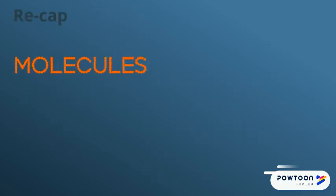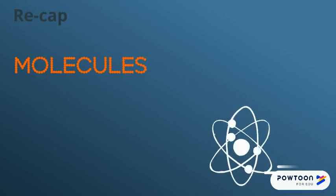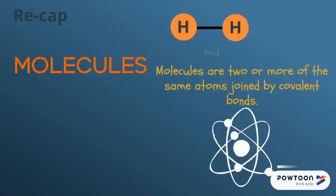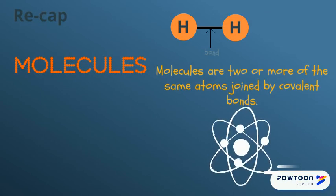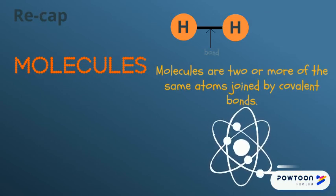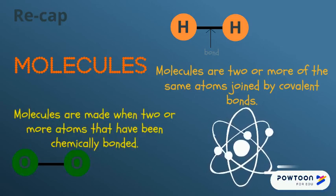Let's recap what we know about molecules. Molecules are made out of atoms. Molecules are made when two or more of the same atoms are joined by covalent bonds, chemically bonded together.